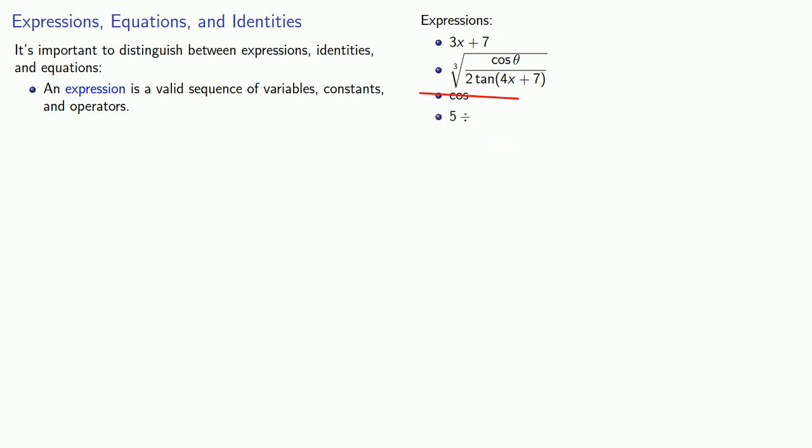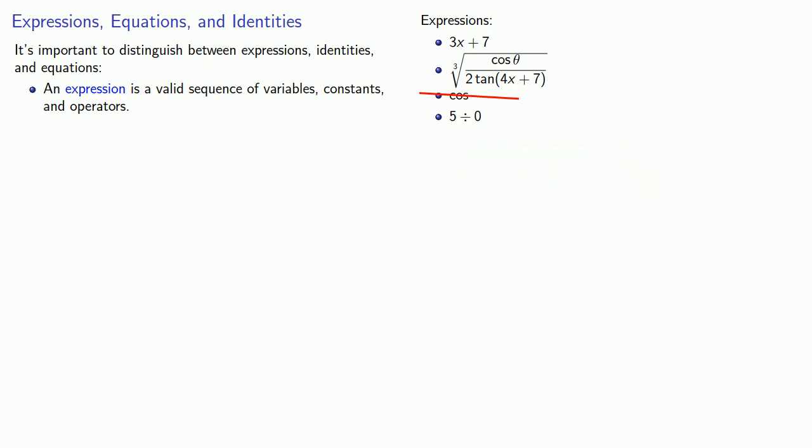5 divided by is not an expression because it's not a valid sequence — it says divide 5 by something but doesn't identify the something. But if we do write something there, it becomes an expression. In this particular case, because we're dividing by 0, and we're not allowed to do that, this expression is meaningless — but it's still an expression.